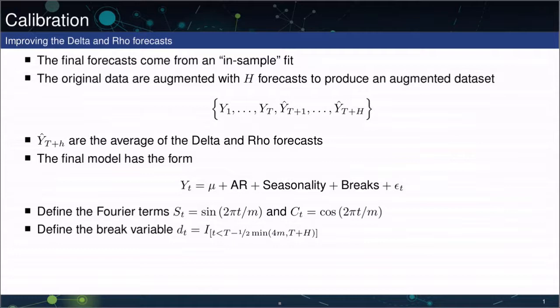The final step in producing forecasts using the CARD forecasting method is known as calibration. Calibration is going to take the forecasts produced by delta and rho, combine them, and then build in fact a new model to fit to the forecast data as well as the in-sample data. Finally, the forecasts will come from the fitted values from this model.